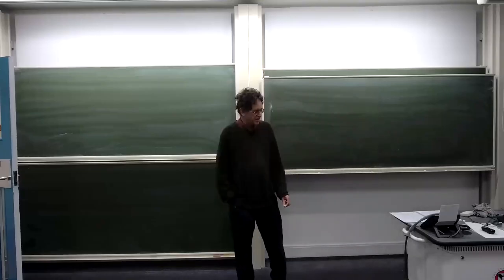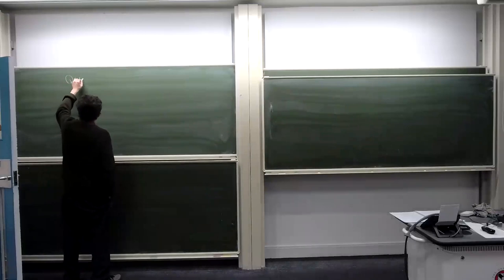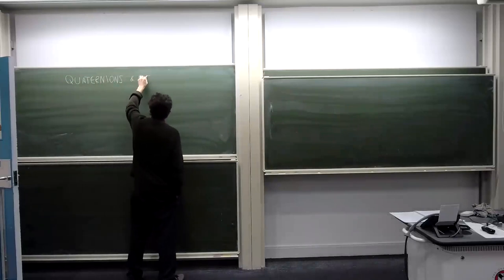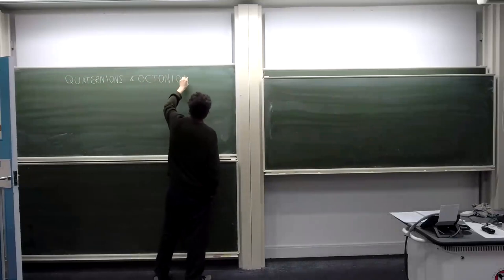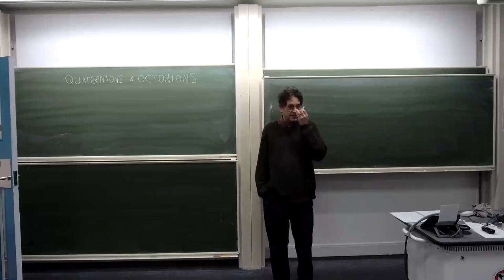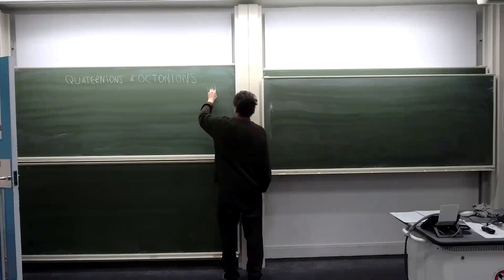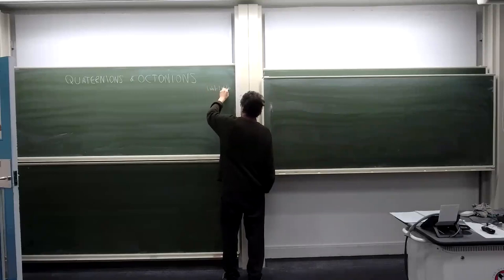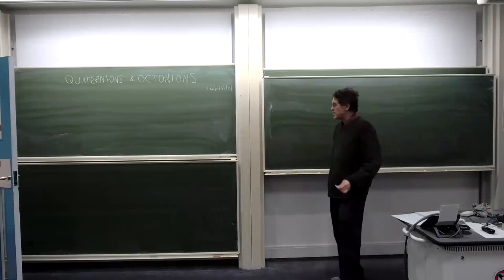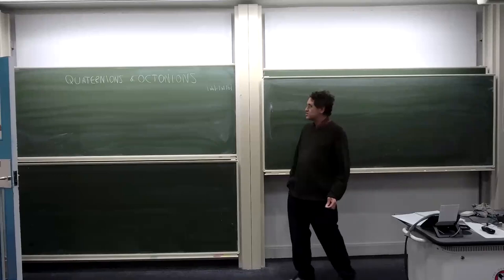Hello. I thought I'd start off on a logically separate subject, although if you've been going to the previous talks, you'll know that I've been foreshadowing it. I want to talk about quaternions and octonions. I've been foreshadowing it because I defined the concept of normed division algebra last time, and I stated this amazing theorem due to Hurwitz that there are just four of them: the real numbers, the complex numbers, the quaternions, and the octonions.